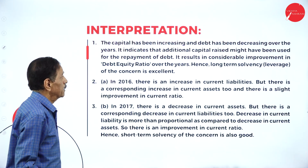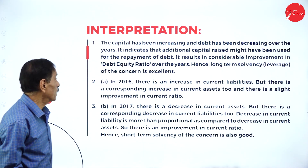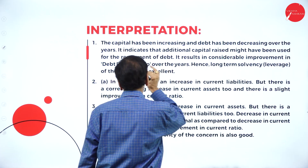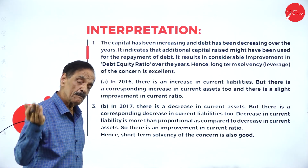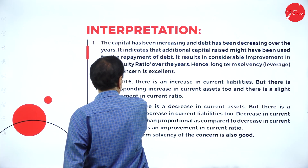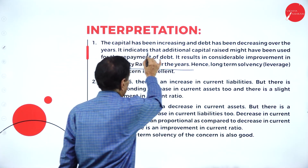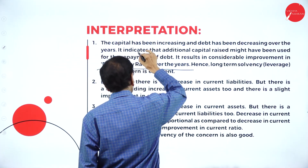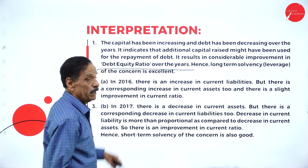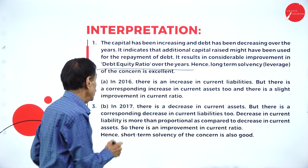Interpretation: The capital has been increased and the debt has been decreased over the years. This indicates that additional capital raised might have been used for the repayment of debt — some amount of capital is utilized to pay the debt. This results in a conservative improvement in the debt-equity ratio, and hence the long-term solvency of the concern is excellent.